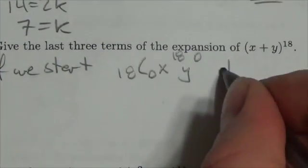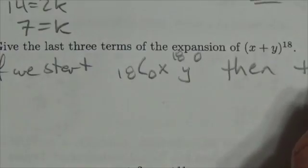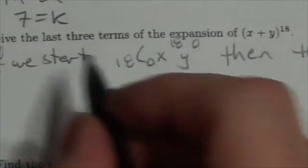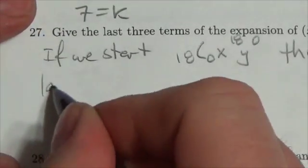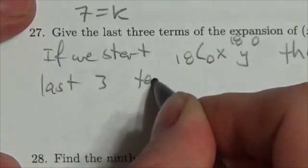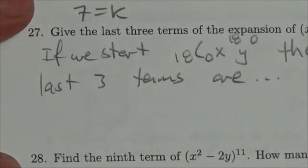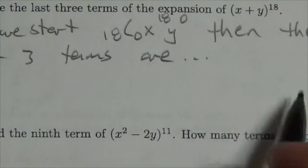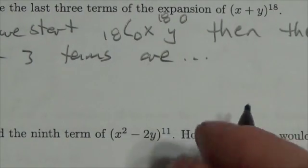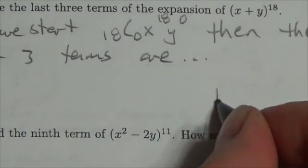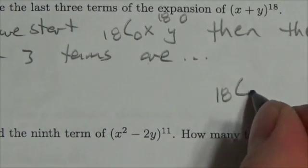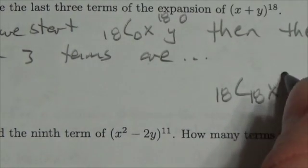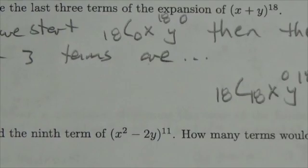But if you start with this, then the last three terms are... let's start by writing this over here, because my last term would be 18 choose 18, x to the 0, y to the 18.